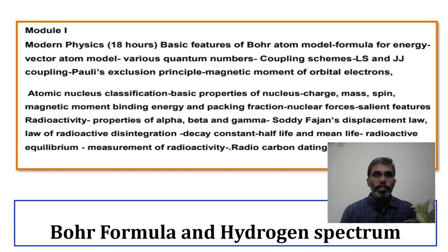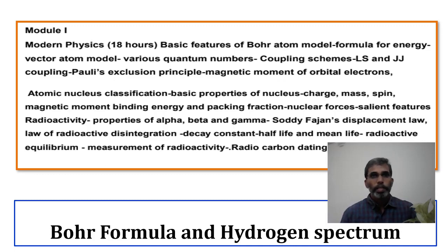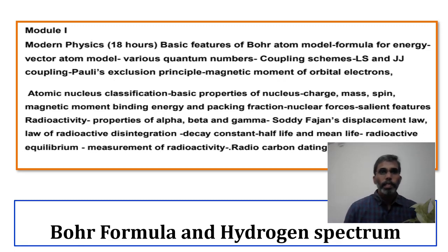In all those equations wherever there is atomic number Z, we will put Z equal to 1, because for the hydrogen atom the atomic number is 1. Last session we had already seen a few results and I suppose you have completed all those assignments and are quite comfortable with those equations and derivations. These derivations you have already seen in class 12, in a chapter named Atoms and Nuclei.